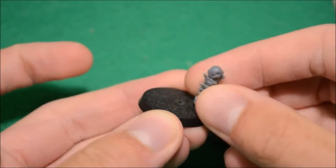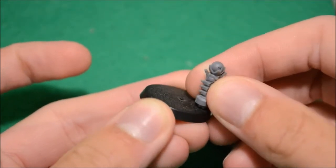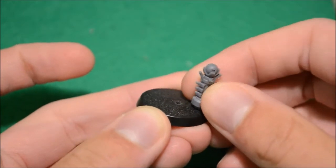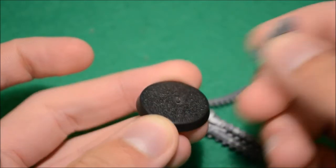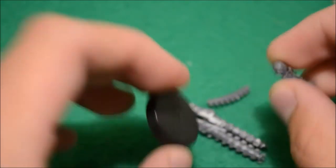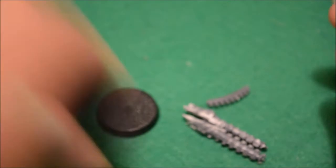He can either use it as a resurrection orb or as a wound counter and piece of terrain. I like the idea of having a resurrection orb that's risen out of the ground on a Necron spine. If it's magnetized, he can do whatever he wants with it.